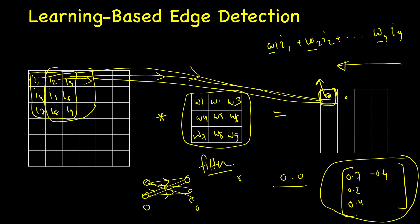The learned filter might look something like 0.7, 0.2, 0.4, -0.4, etc. — a custom filter that the network learns on its own. If trained on a good number of images, these learned weights should be much more robust than anything we can hand-engineer.